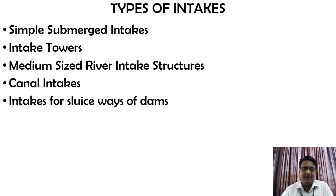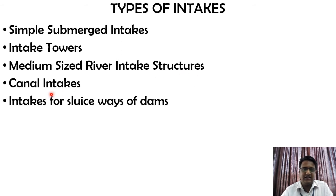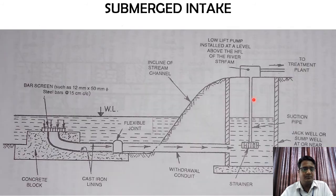There are five types of intake structures: simple submerged intake structures, intake towers, medium-sized river intake structures, canal intakes, and intakes for sluice bases of dams.